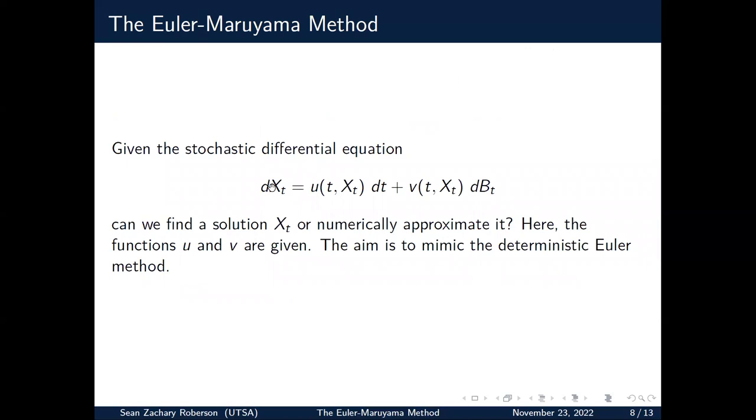So given this stochastic differential equation, in general we have this process, this derivative dX_t equals some function u dt plus v dB_t, and this can be interpreted to say some sort of total derivative type object. Our main question is, can we find a solution X_t, or can we numerically approximate it well? And so of course here the functions u and v will be given, and the aim is to mimic the deterministic Euler method.